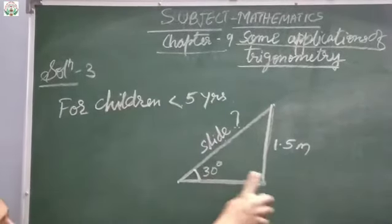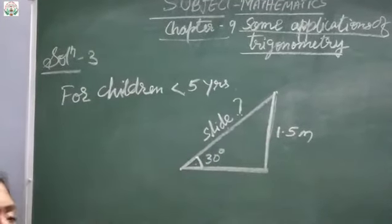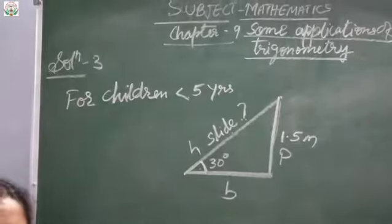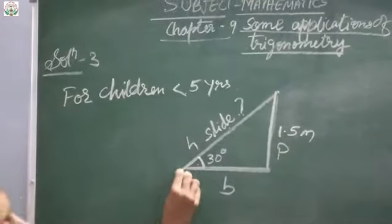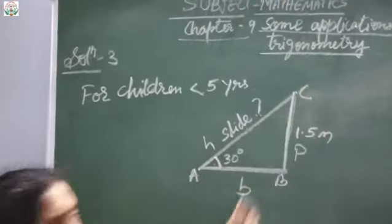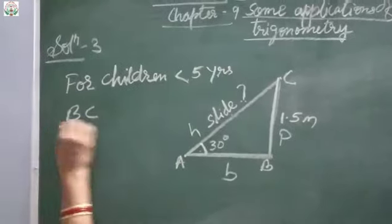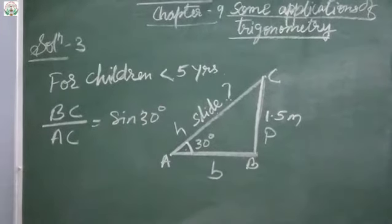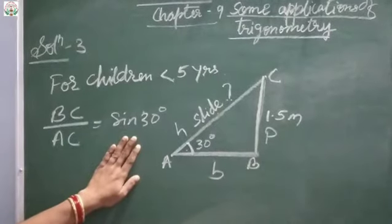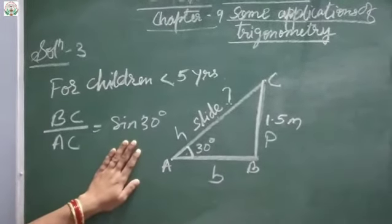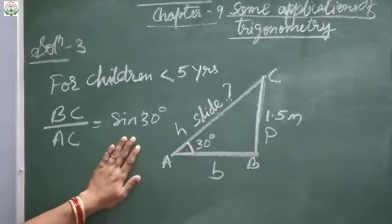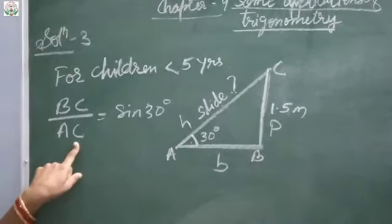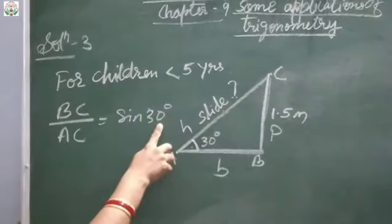The angle is given and P is given because the angle's opposite side is perpendicular P. This is B (base) and this is H (hypotenuse). We have to find the hypotenuse. Suppose the triangle is named A, B and C. So BC upon AC equals to sine 30 degrees. We know that sine theta equals to P upon H, so BC is the perpendicular P and AC is the hypotenuse, which equals to sine 30 degrees.